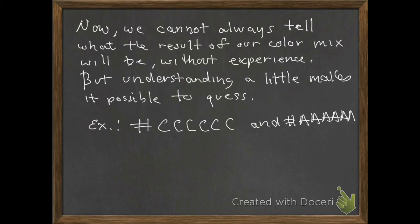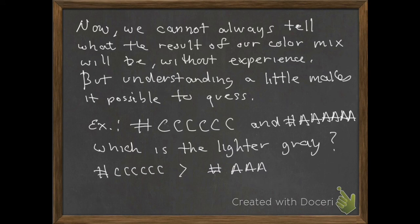Now, what about CCCCCC and AAAAAA? They're both grays because each color is turned on at the same intensity, but which is lighter? If we look at our hexadecimal numbers, CCCCCC is greater than AAAAAA, and so that's going to be a lighter gray.